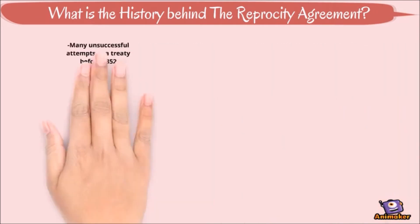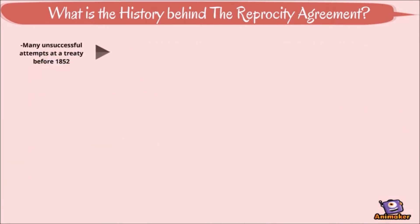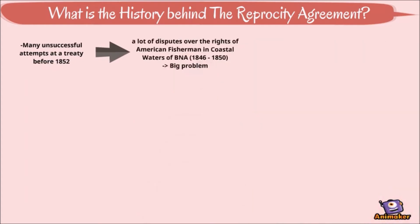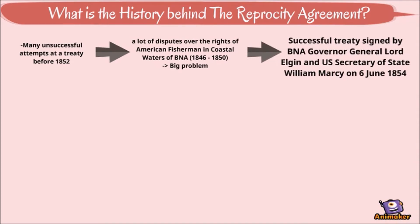Moving on to the history behind the treaty. Before 1852, British diplomats had actually tried to negotiate a treaty many times without much success. The need for this treaty increased between 1846 and 1850, when disputes over the rights of American fishermen in the coastal waters of British North America became a very big issue. Finally, a successful Reciprocity Treaty was signed by British North American Governor General Lord Elgin and the U.S. Secretary of State William Marcy on June 6 of 1854. At first, the treaty was quite popular in both countries.